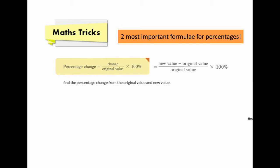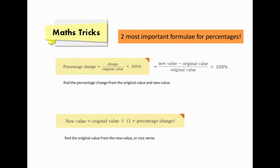The second important formula is: new value equals original value times (1 plus percentage change). We will use this formula to find the original value from the new value, or vice versa, to find the new value from the original value. We can actually solve most of the problems in this chapter using these two formulae.